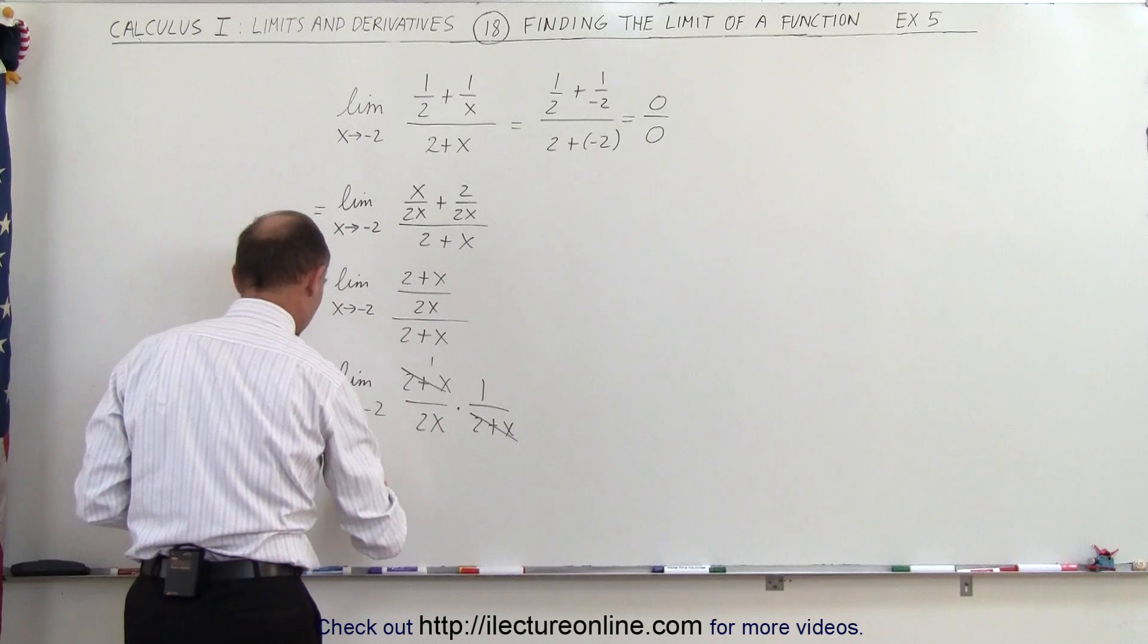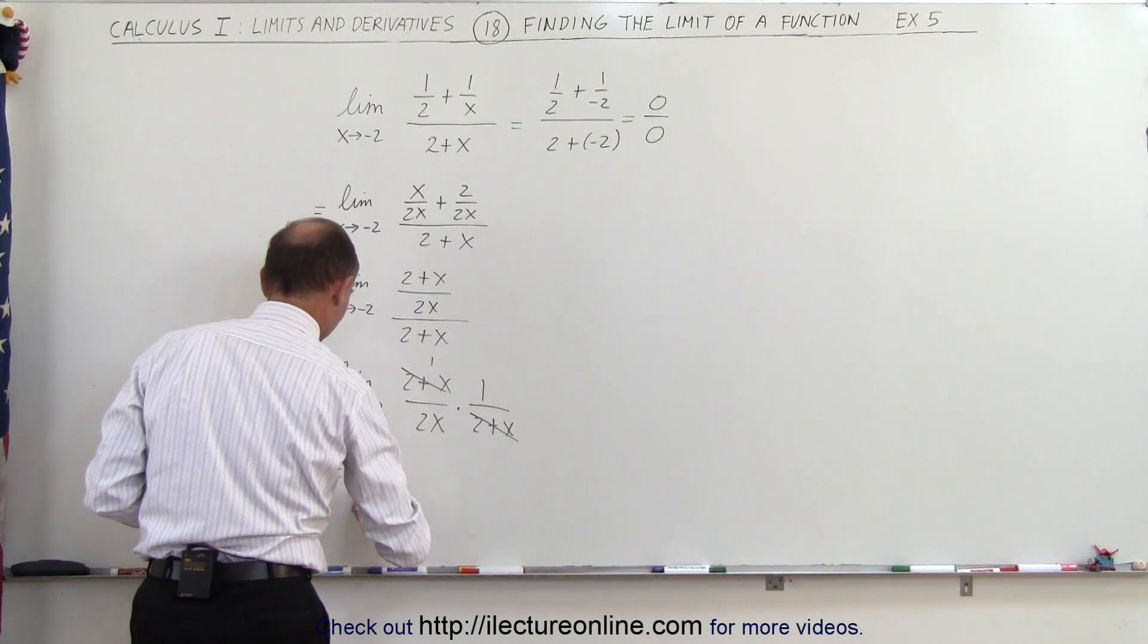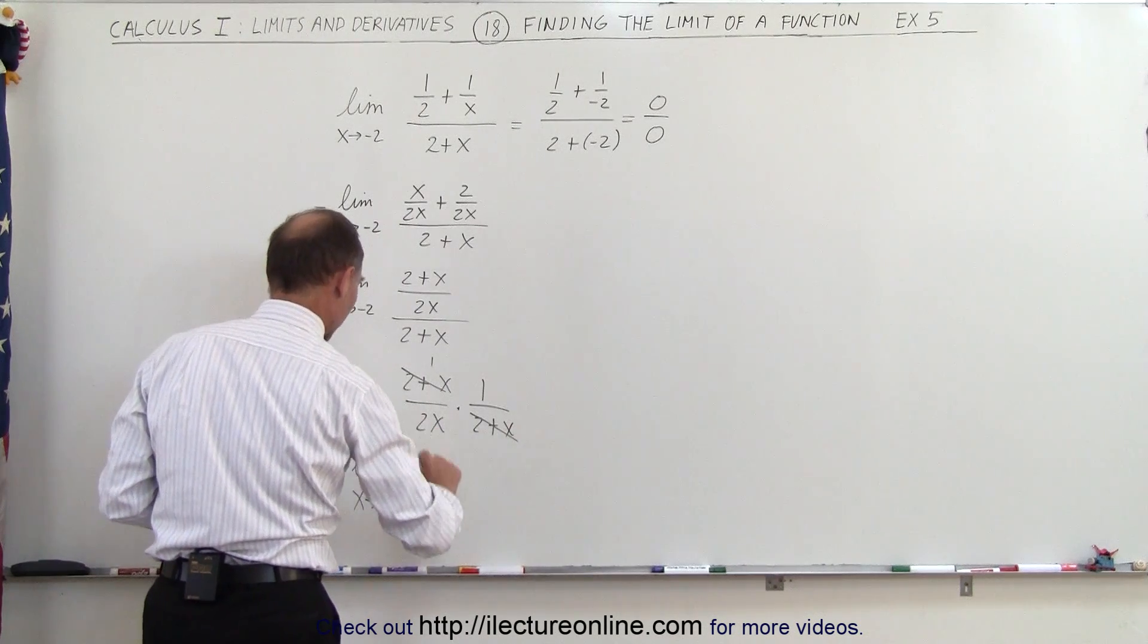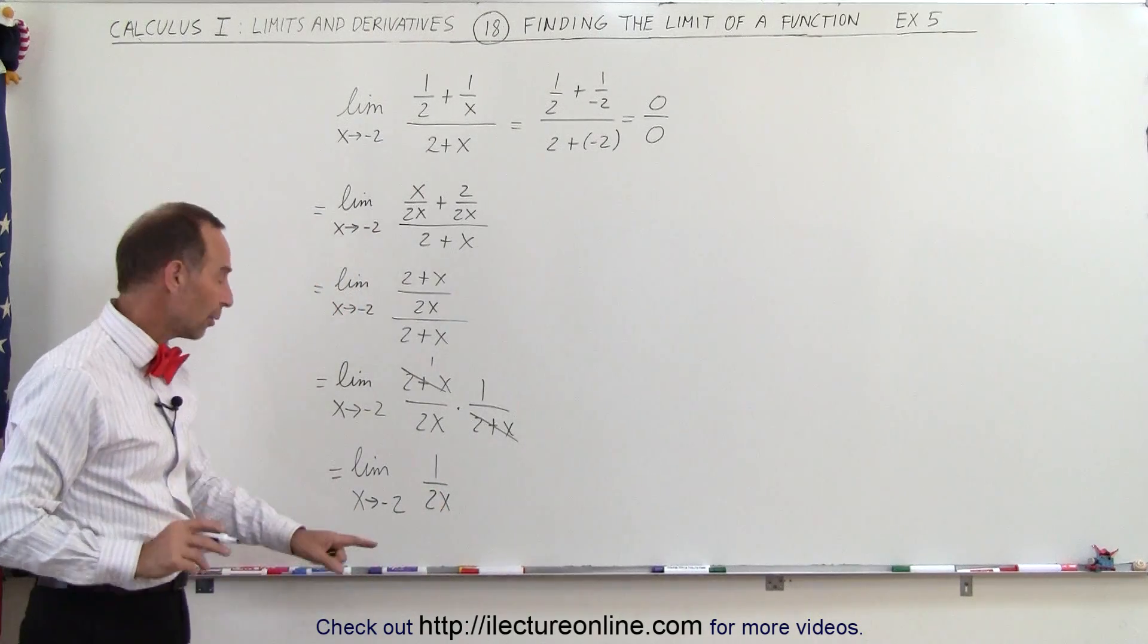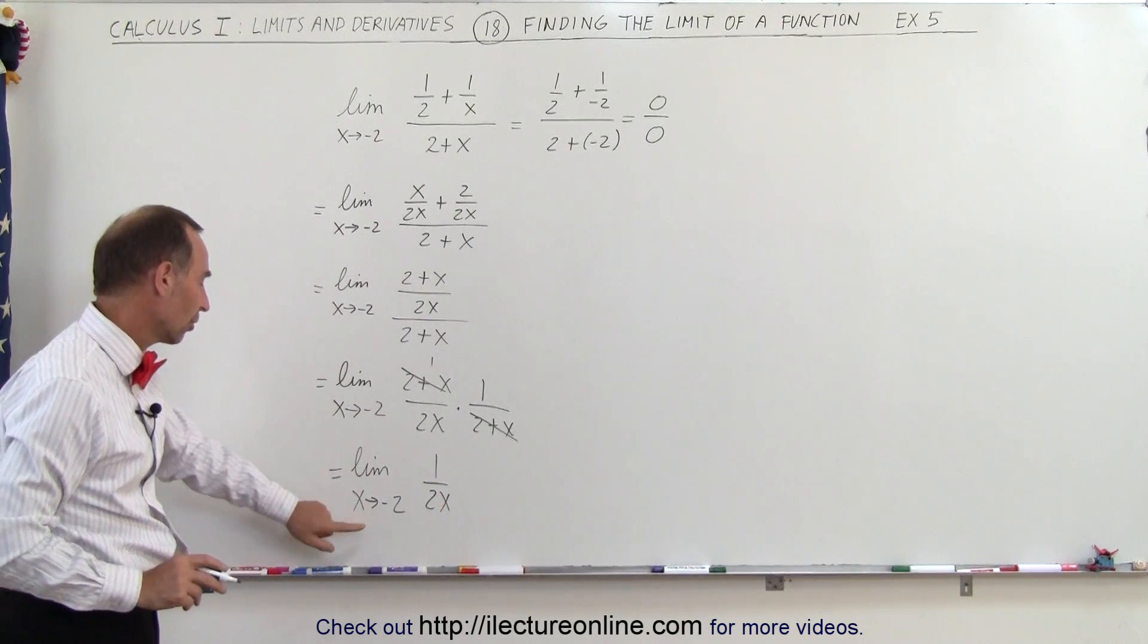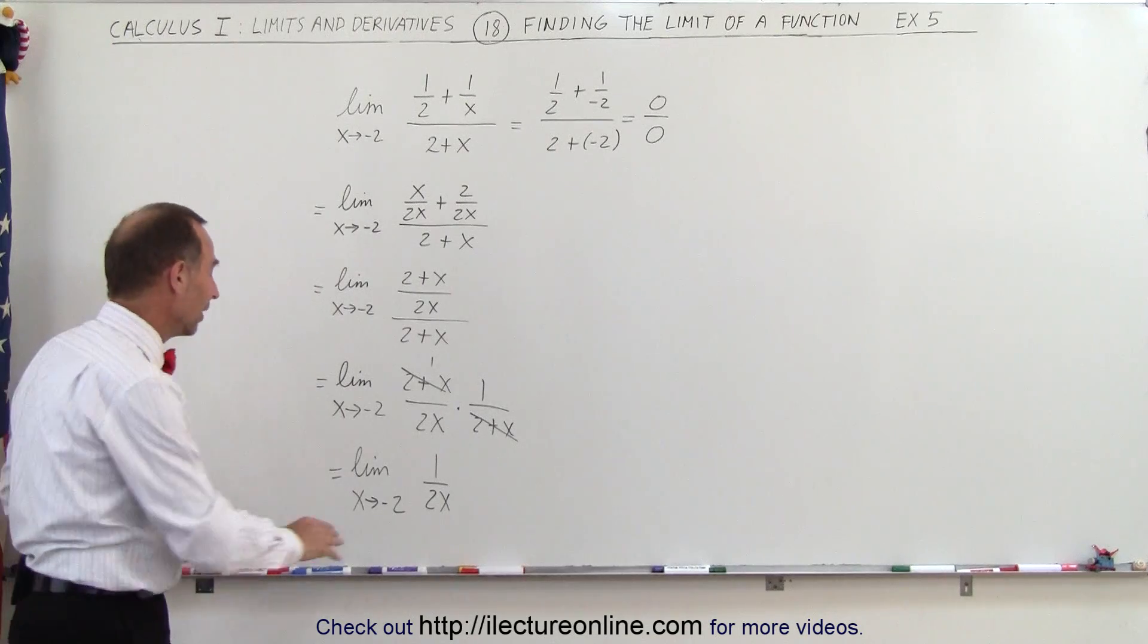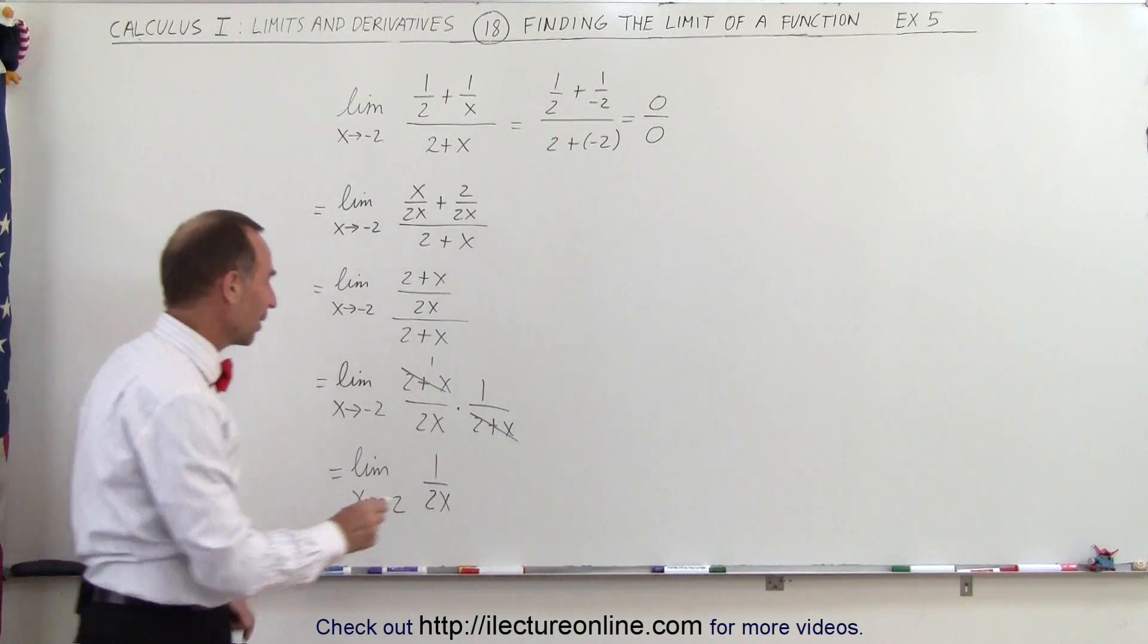So this becomes, oh I got to rewrite it here, the limit as x approaches negative 2 of 1 divided by 2x. And now we can go ahead and allow the limit to be approached, or in other words now we can allow x to approach negative 2.